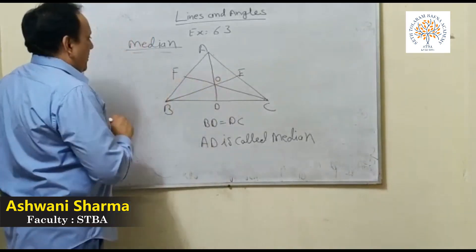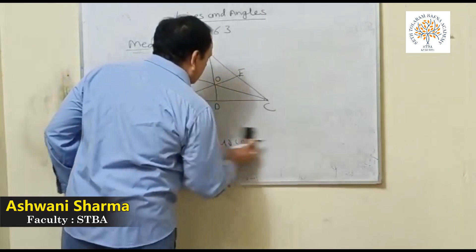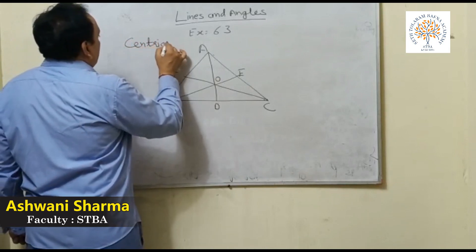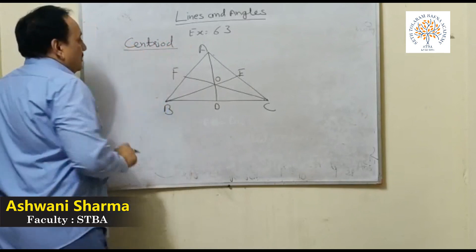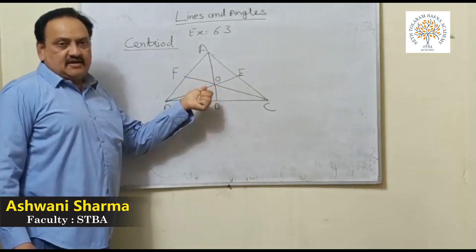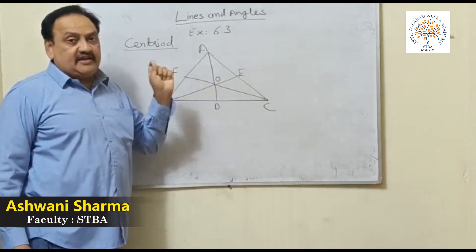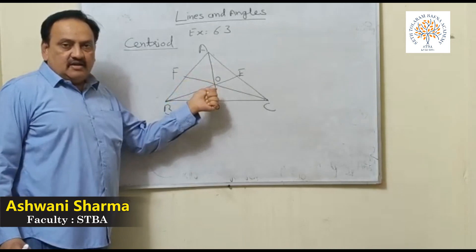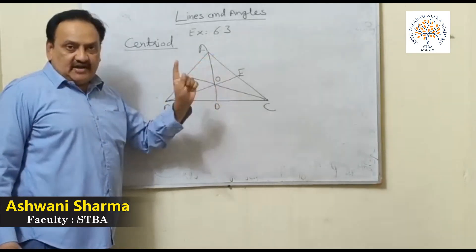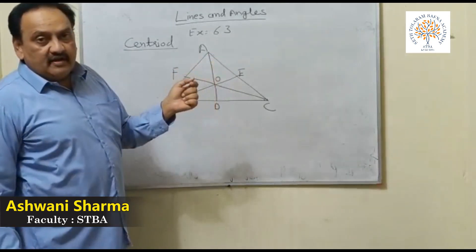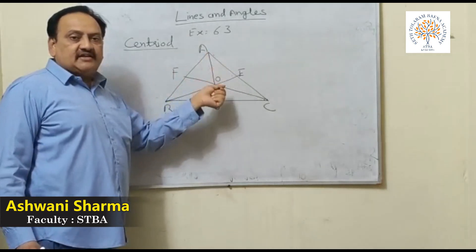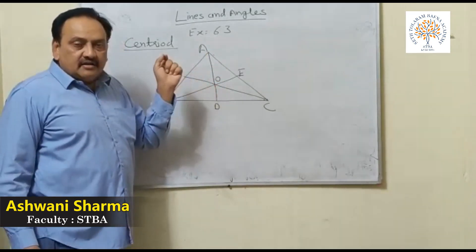Now, what is the centroid? The point where all three medians intersect each other is called the centroid. Here, O is the centroid of triangle ABC. This is important — the centroid is the point where all medians intersect each other.